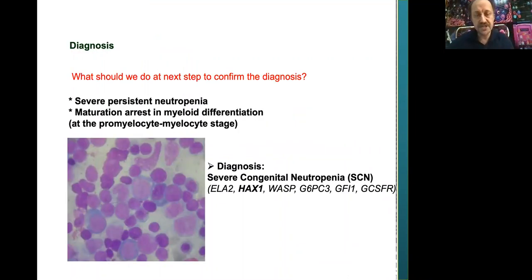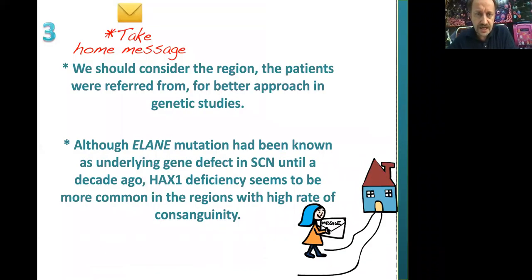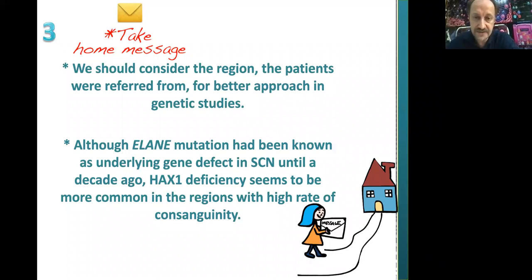In this case, the patient had severe congenital neutropenia. We checked the bone marrow and found maturation arrest at the myeloid differentiation stage. Genetic testing revealed a HACS1 deficiency. This was published about 10 years ago. We should consider the regional prevalence of gene defects — ELANE mutations are more common in Ukraine where consanguinity is low, while HACS1 is more common in the Middle East due to high rates of consanguinity. We should check for consanguinity and the relevant gene defect accordingly.